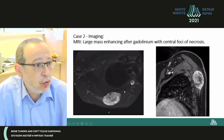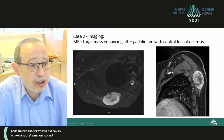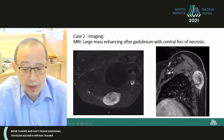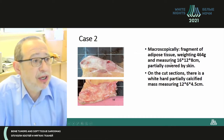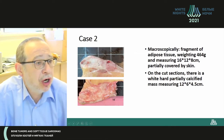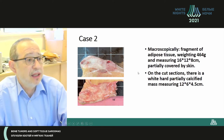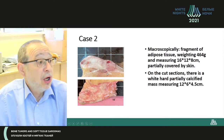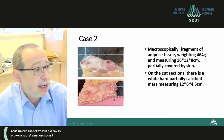After gadolinium contrasting, we can enhance the central part of necrosis. The mass is very well-limited and clear, with calcifications. Morphologically, you can see some fat tissue with a mass of 12 by 16 by 8 centimeters, partially covered by skin and partially calcified.